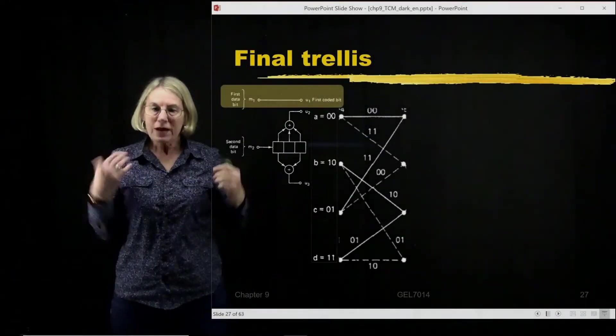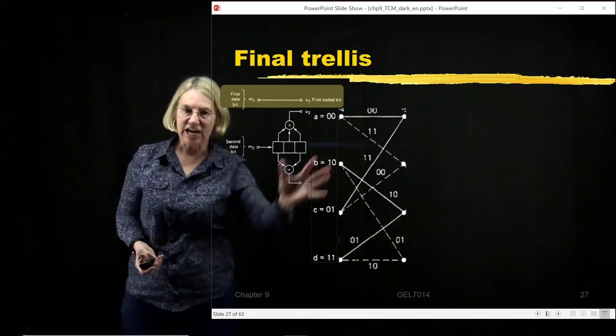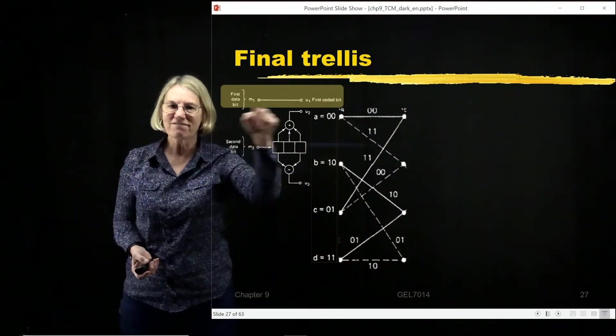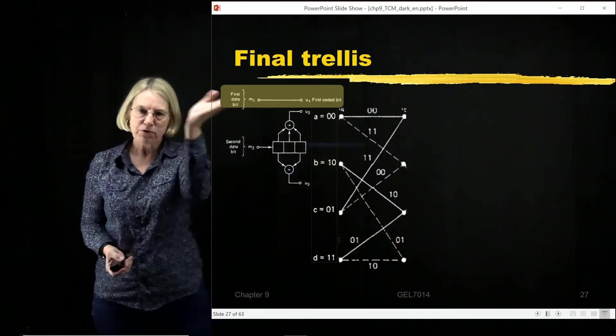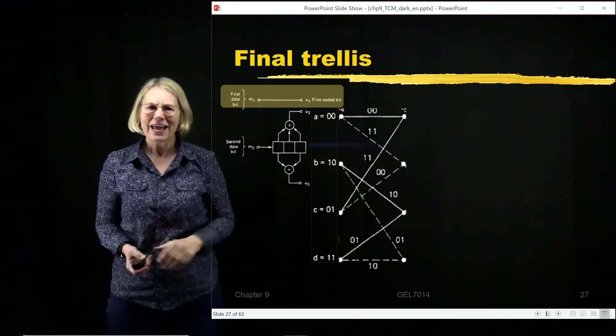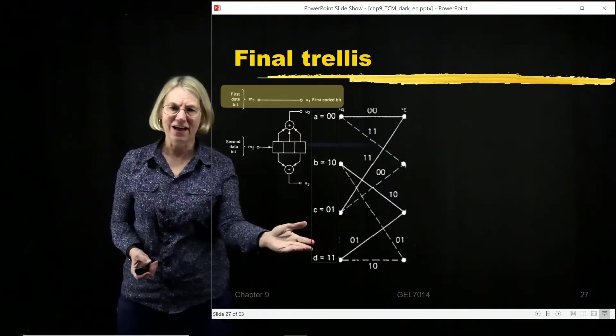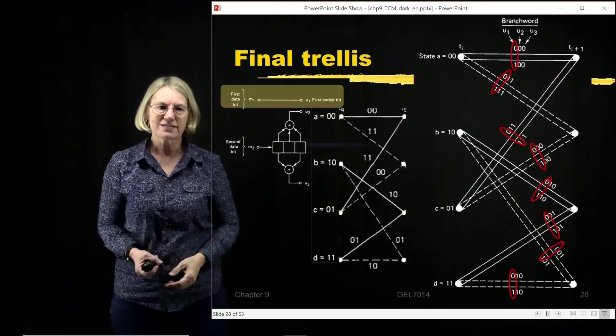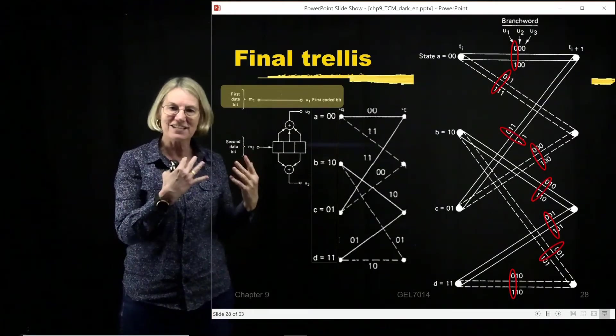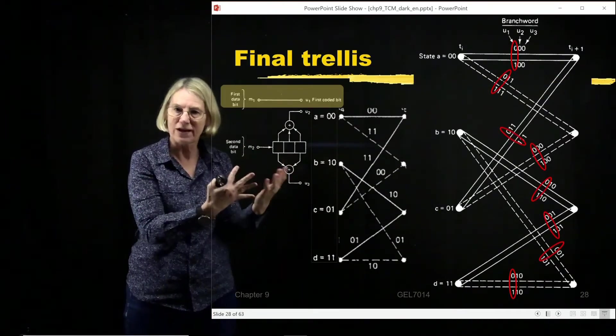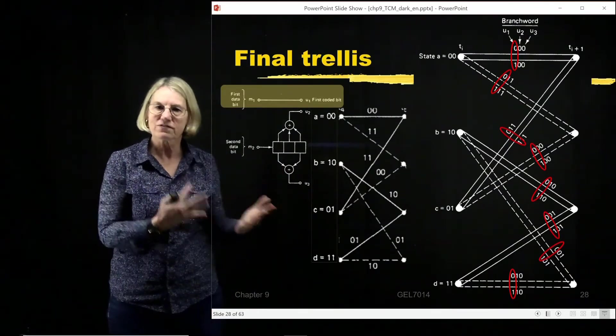So in trellis-coded modulation, I don't have just this encoder. I also have this input bit, which has no coding at all. And I have to somehow take account of that in this trellis. And so what I do is I have another kind of, I do another version of this trellis. And in this second version of the trellis,